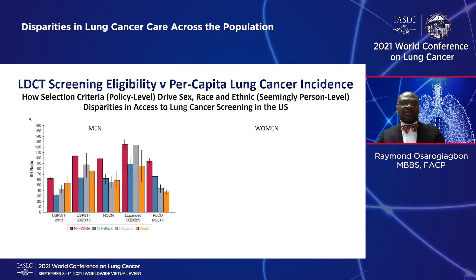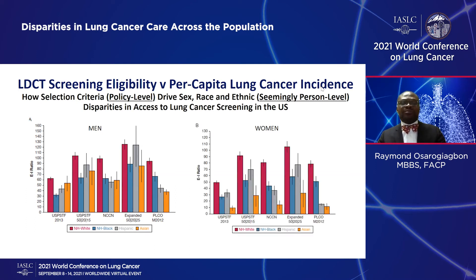When you look at the current criteria for eligibility for CT screening by race and sex, and match that up with the incidence of lung cancer in those demographic populations, you find a striking disparity for both men and women. White men, shown in the red bar, are most readily accessible to screening, whereas Black men and other races are significantly less likely to be eligible for screening. This is an example of how our screening criteria actually drive racial disparities in access to screening.